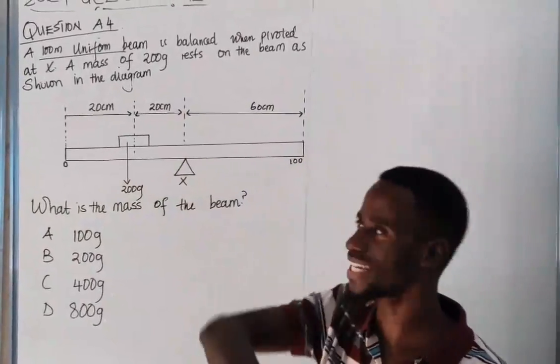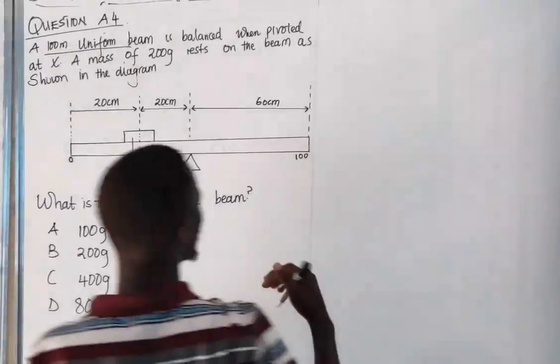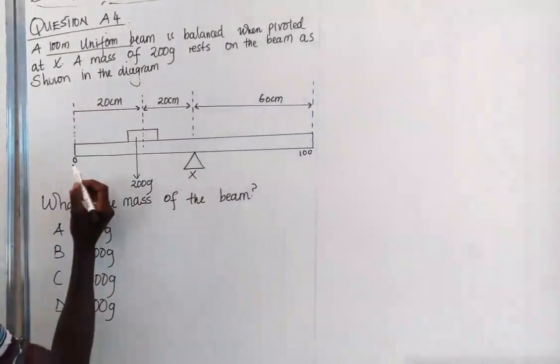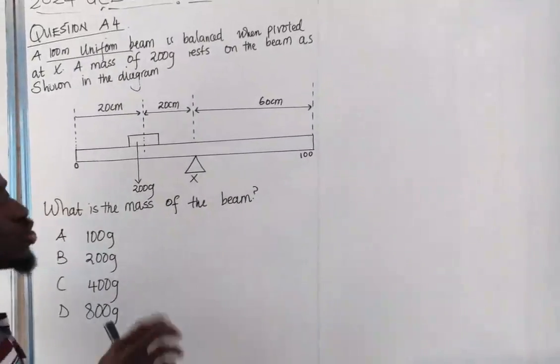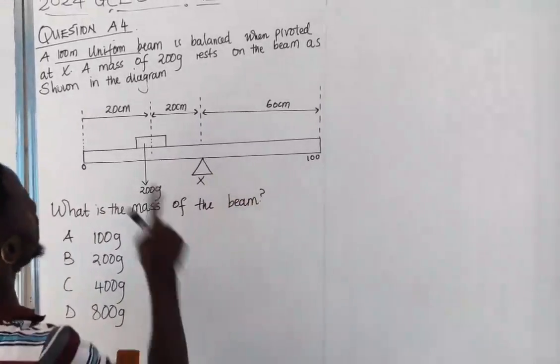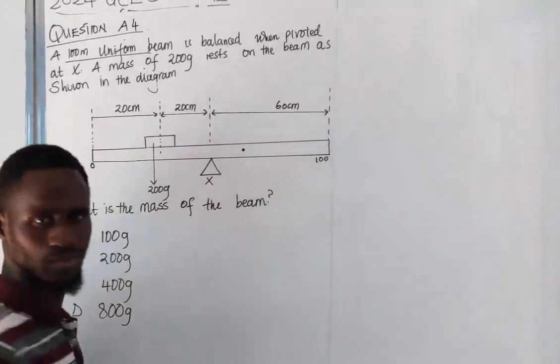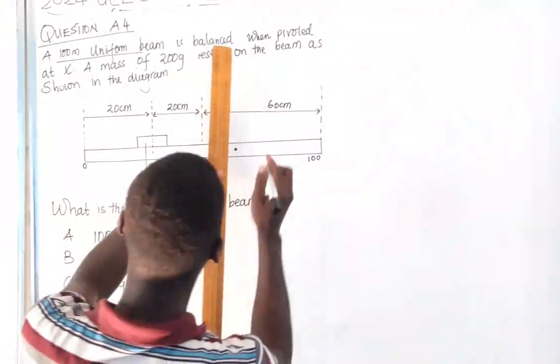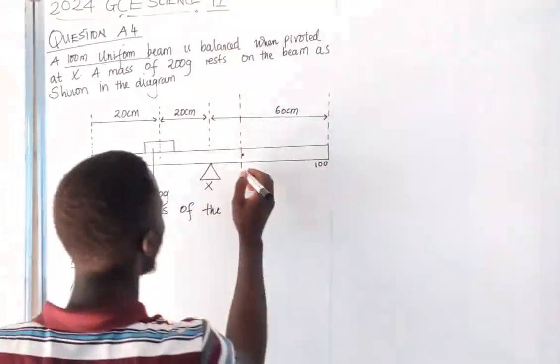So we are going to locate - now remember, this is from zero to 100. What is the center of 100? 50. So we are going to locate where 50 centimeters is. We can just approximate. If this is 40, let's say our 50 is somewhere there. Are we there? Right. So we say our 50 is somewhere there. This is where our 50 mark is.